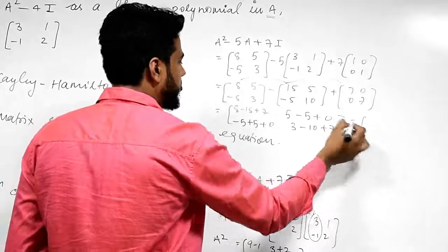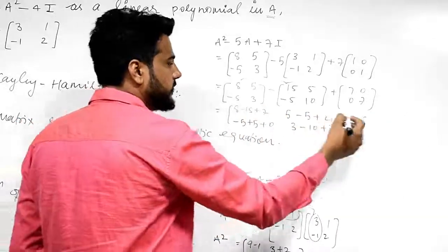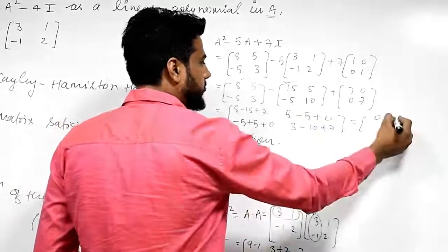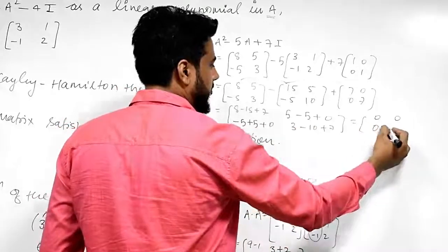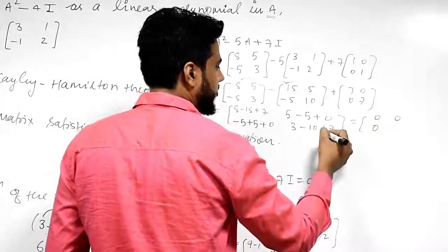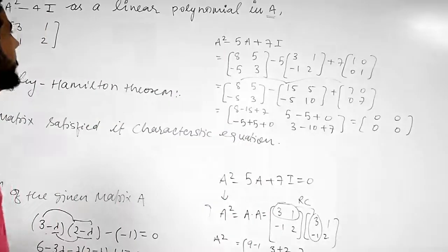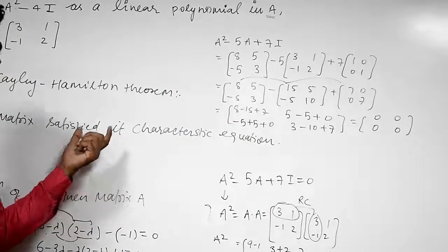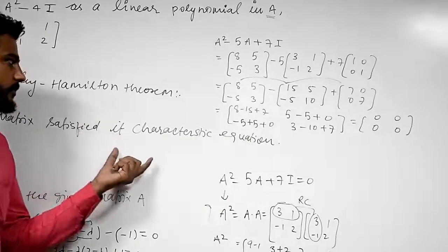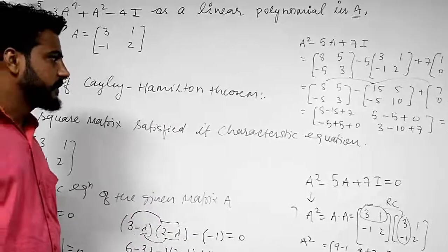Now verifying: A squared minus 5A plus 7I equals [8, 5; -5, 3] minus 5 times [3, 1; -1, 2] plus 7 times [1, 0; 0, 1]. This gives [8 minus 15 plus 7, 5 minus 5 plus 0; -5 plus 5 plus 0, 3 minus 10 plus 7] equals [0, 0; 0, 0]. The square matrix satisfies its characteristic equation.